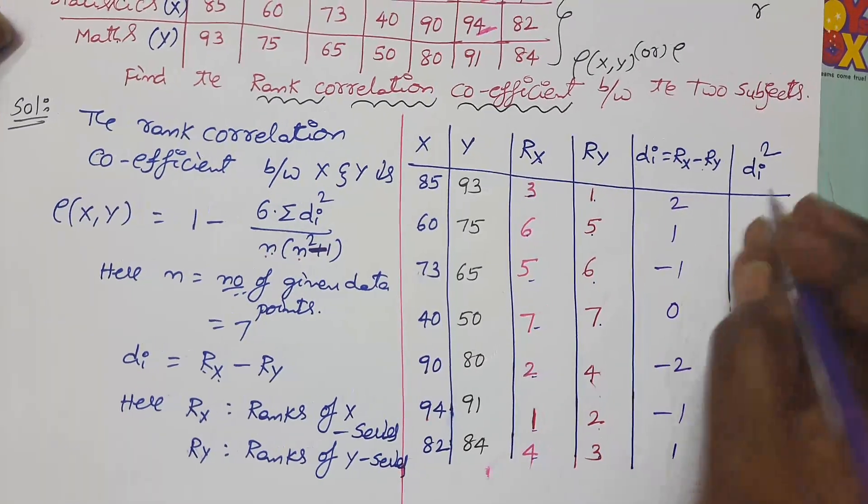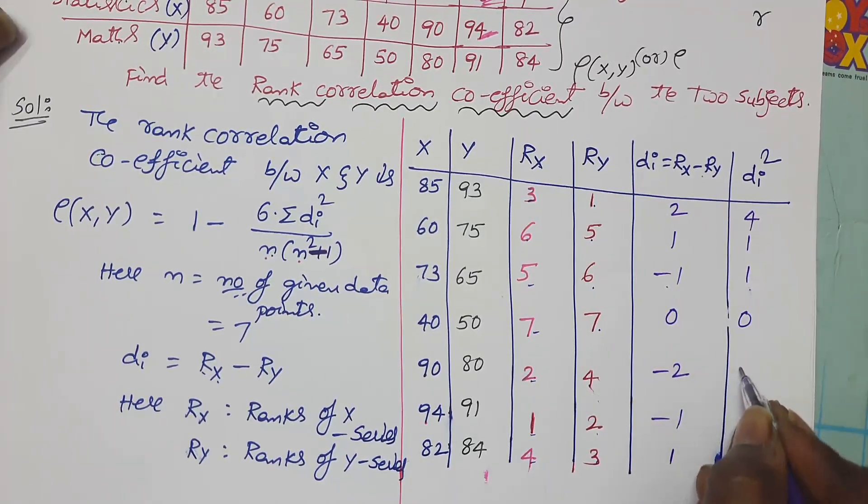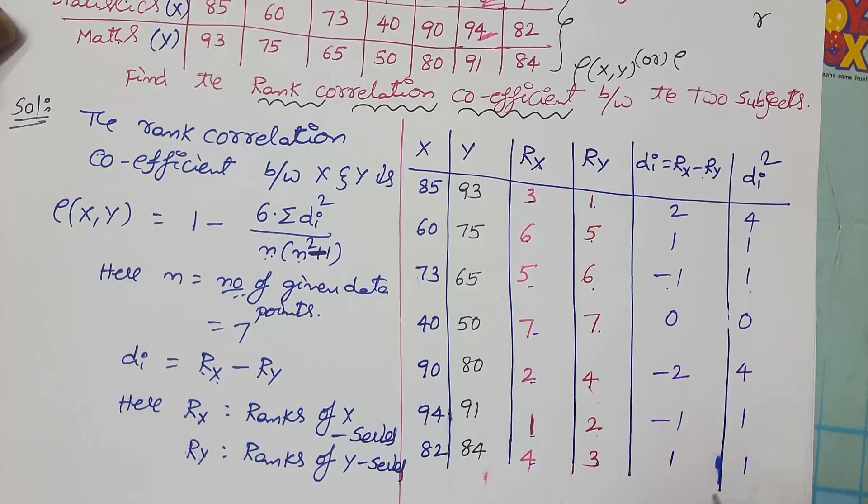Squaring the values: 2 square, 4; 1; 1. Negative 1 square means positive. 0. Minus 2 square, 4; 1; 1.